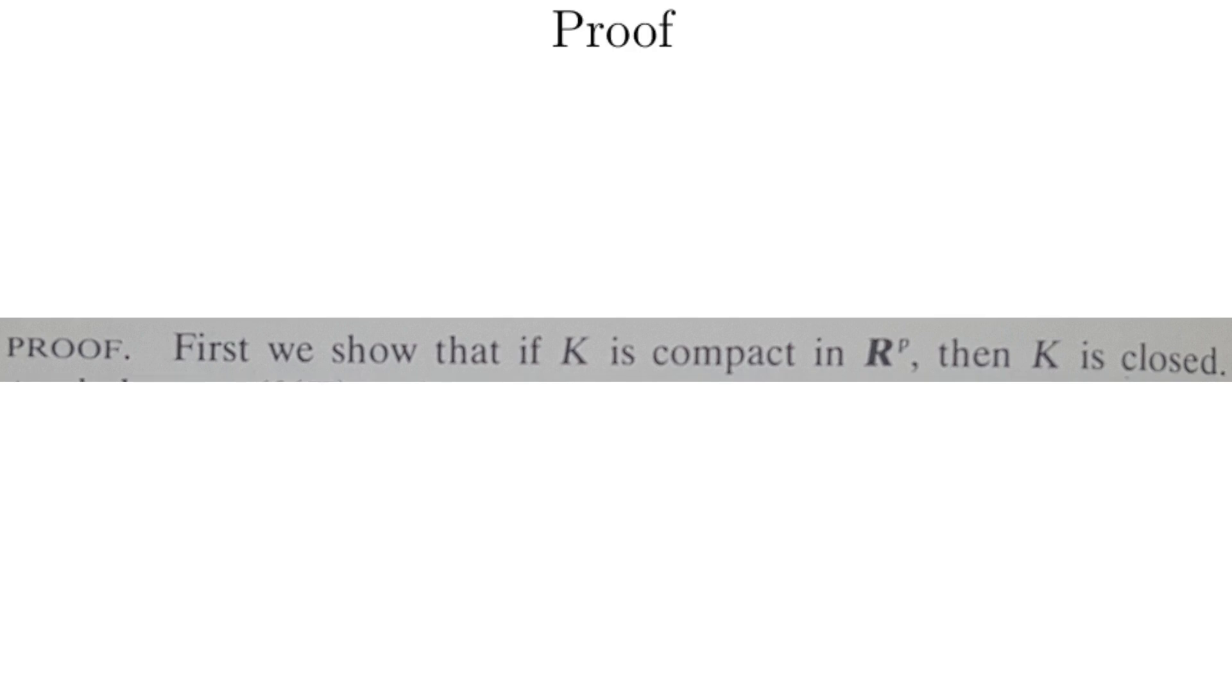Proof. First we show that if K is compact in R^p, then K is closed. We are now in the proof. This first statement is reiterating the goal and showing that first we will focus on just proving that compactness implies closedness. We will worry about boundedness later.